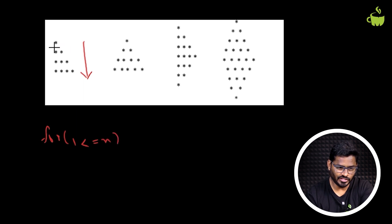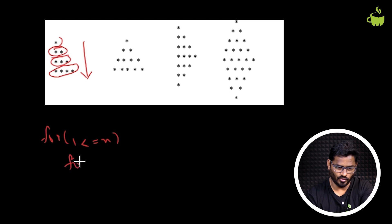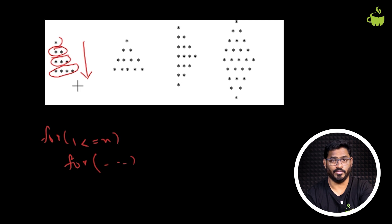Then in each line, you have to figure out how many number of times you need to print. In the first line, you're printing only once. In the second line, you're printing 2 times. In the third line, 3 times. In the fourth line, 4 times. So you need to run another nested for loop to decide how many number of times you need to print this particular star or number.